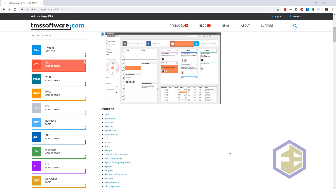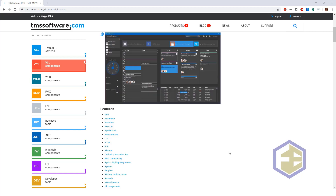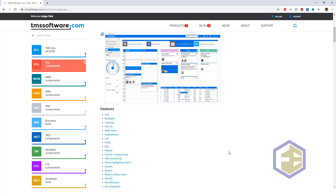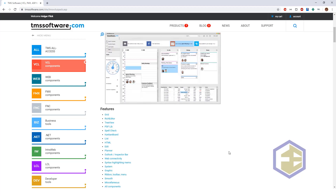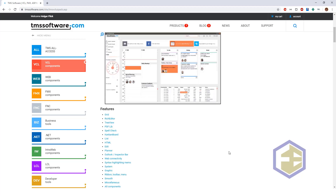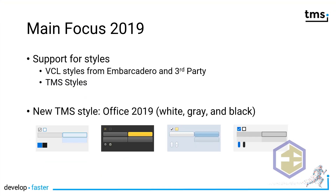Style support is a key focus — the styles from Embarcadero that have been included in Delphi are supported, but also the styles that TMS introduced much earlier into their product lines. This was the main focus for 2019. Styles are now supported for the VCL style file format defined by Embarcadero, and there are styles available not only from Embarcadero but also from third parties.